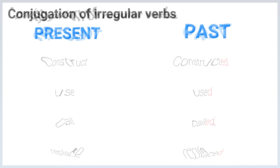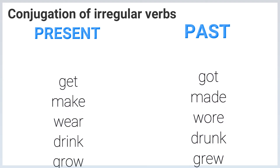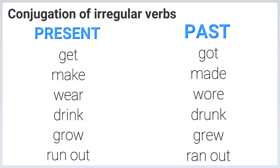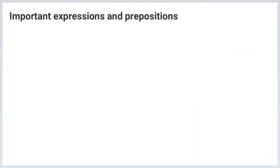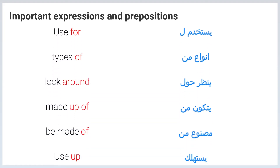Irregular verbs: Get / Got. Make / Made. Wear / Wore. Drink / Drunk. Grow / Grew. Run Out / Ran Out. Important expressions and prepositions: Use For. Types Of. Look Around. Made Up Of. Be Made Of. Use Up.